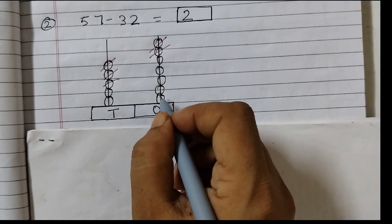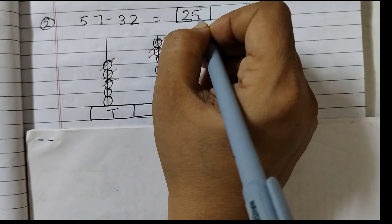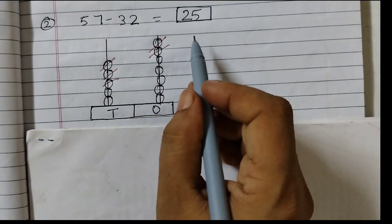1's place we have 1, 2, 3, 4, 5. 5 beads. So the answer is 25.